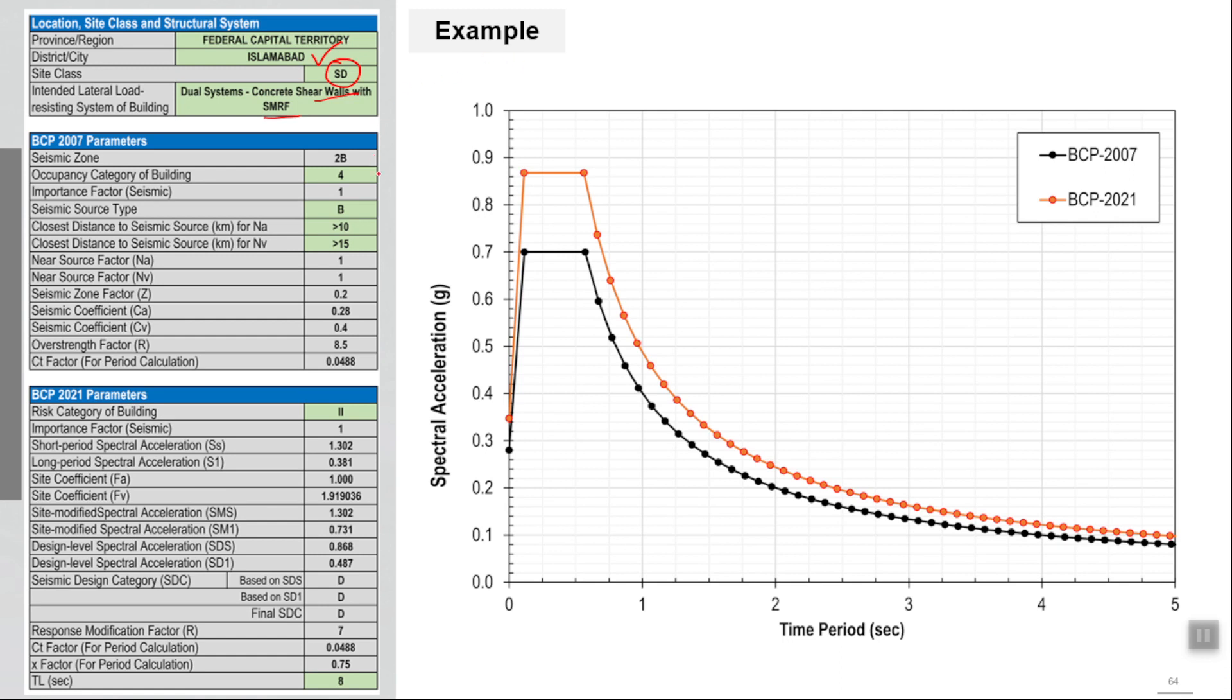This comparison is plotted for, if you talk about BCP 2007, I selected the occupancy category 4 which is the standard occupancy residential building, and these inputs in green color. For BCP 2021, there is additional information required to check whether that structural system is allowed or not, and that is risk category. I selected the standard risk category, risk category 2, which is comparable with the occupancy category 4 of UBC. In UBC there is an occupancy category 1 to 5, 1 is most severe. In IBC 2021 or BCP 2021, we have risk category 1 to 4, and in that 4 is the severe one. I keep them constant, almost same. This is the comparison now.